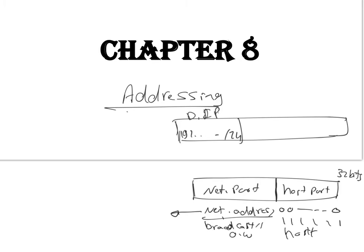The broadcast address can be used as a destination address if we want to send to all hosts on a network — all hosts will receive that packet. Otherwise, it's a host address, which refers to a specific host. For example, 192.168.10.1 is a valid host address — it's used to refer to the default gateway, which is the router interface. From now on we'll do exercises to identify whether an address is a network, host, or broadcast address.